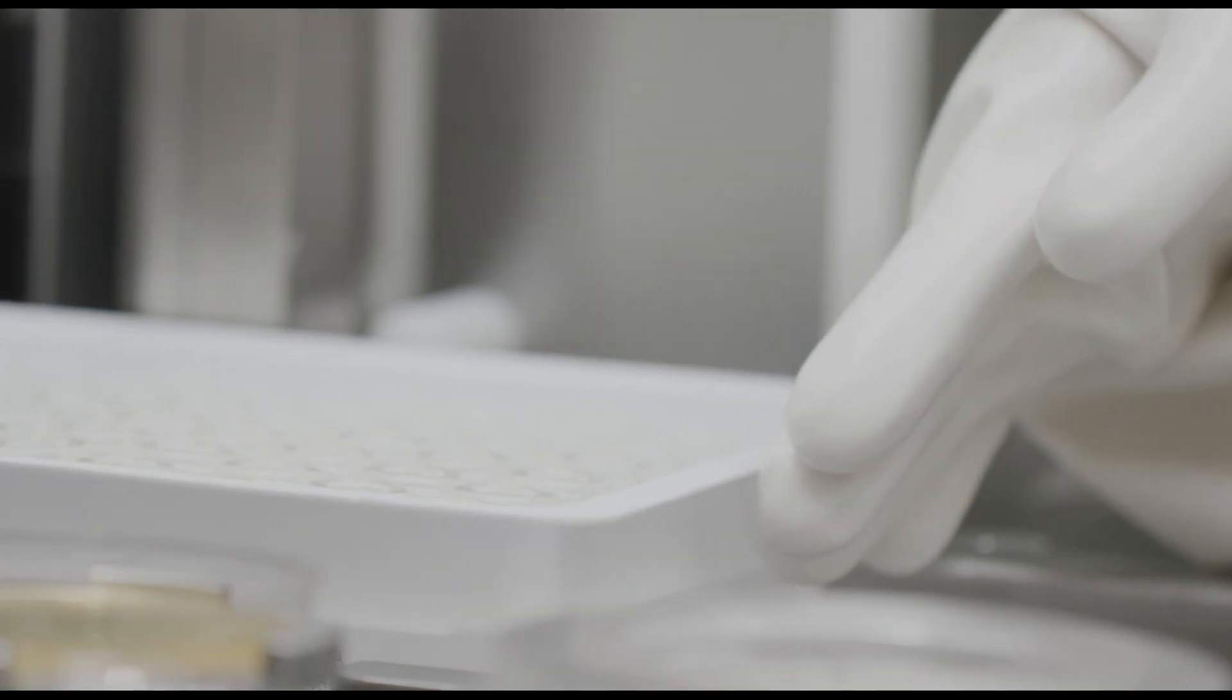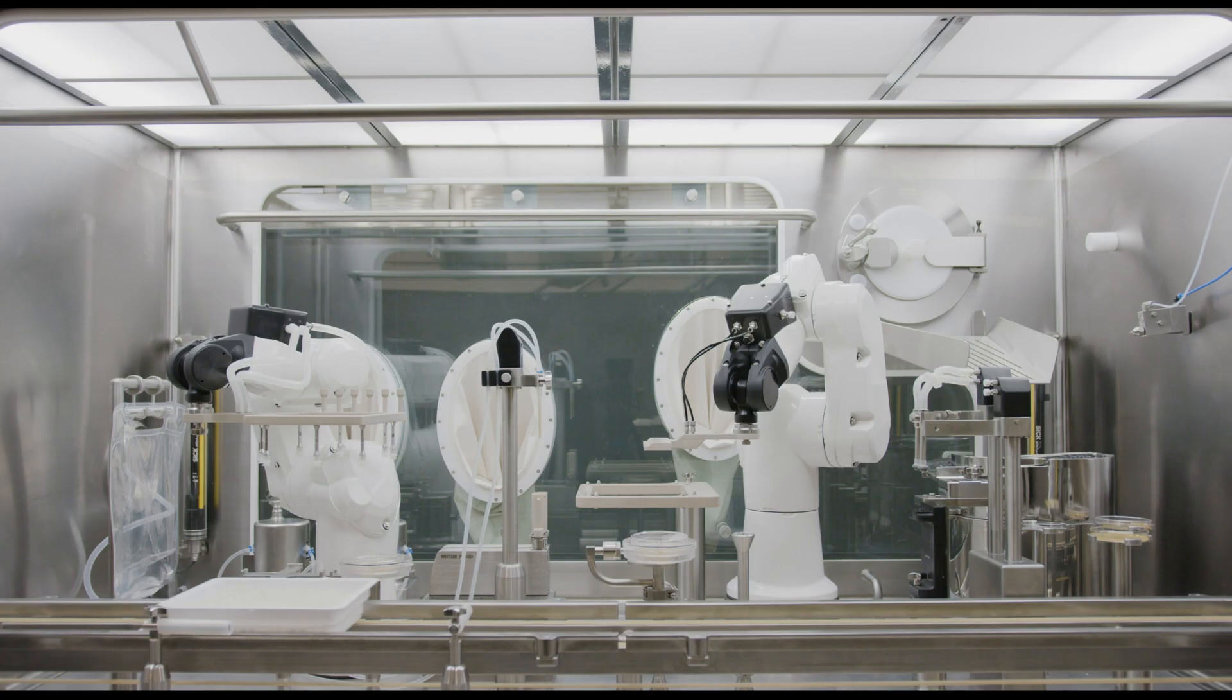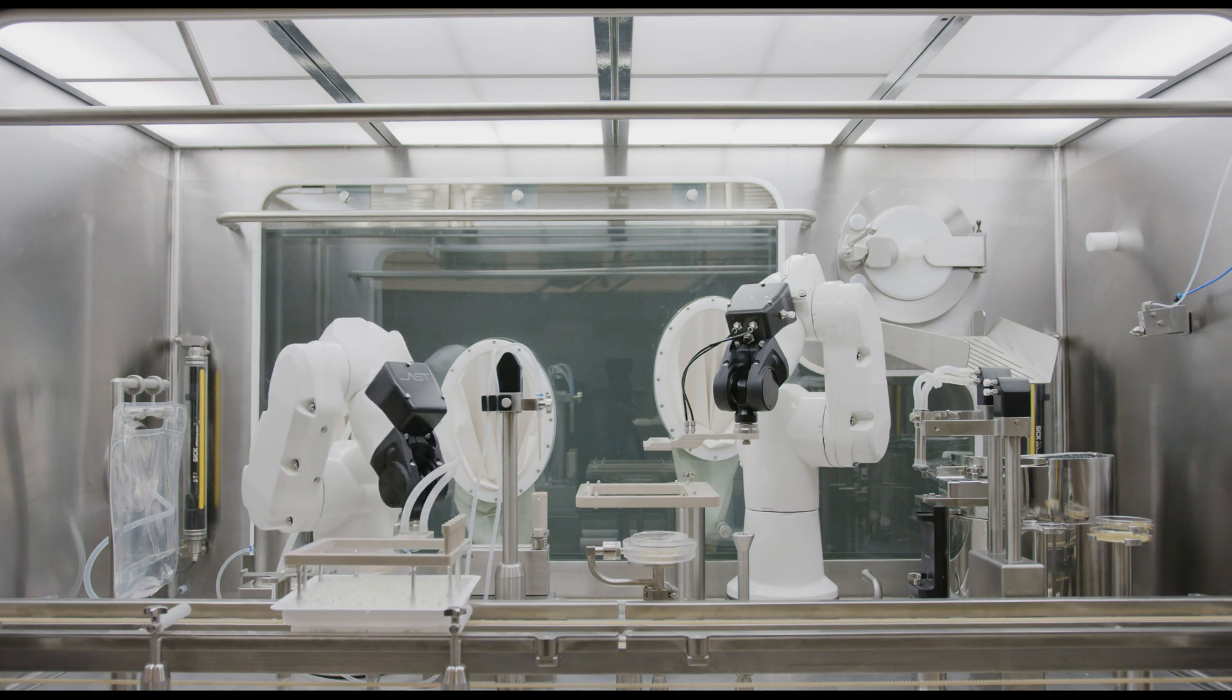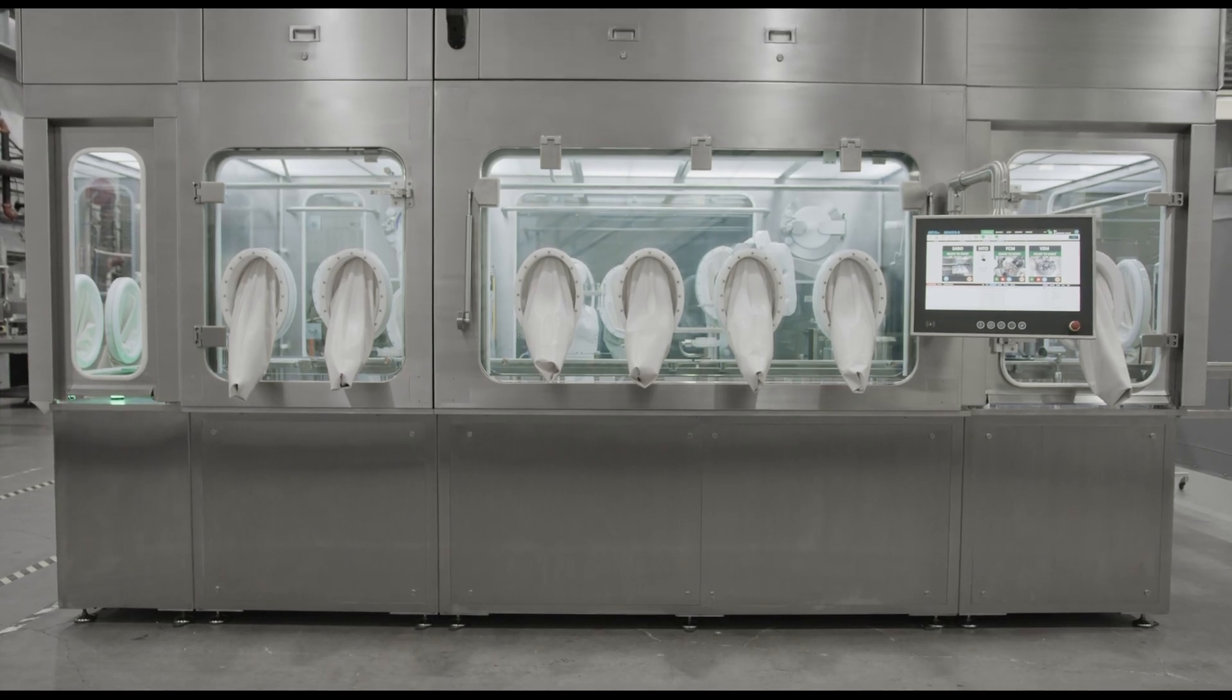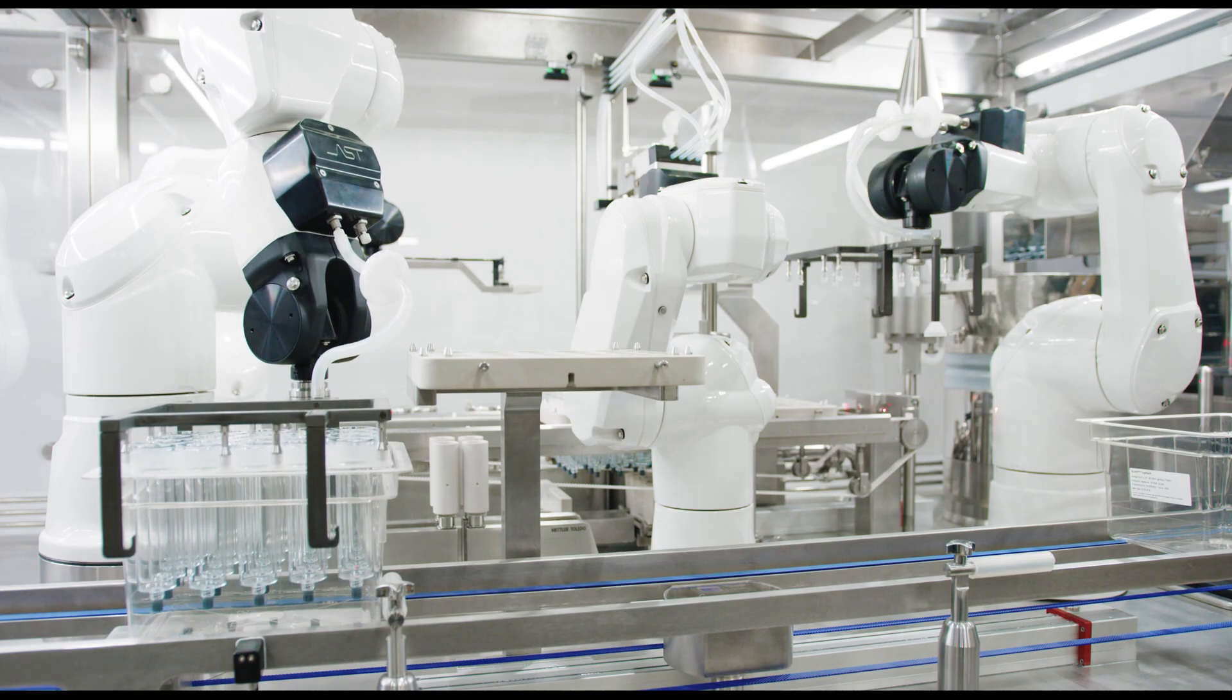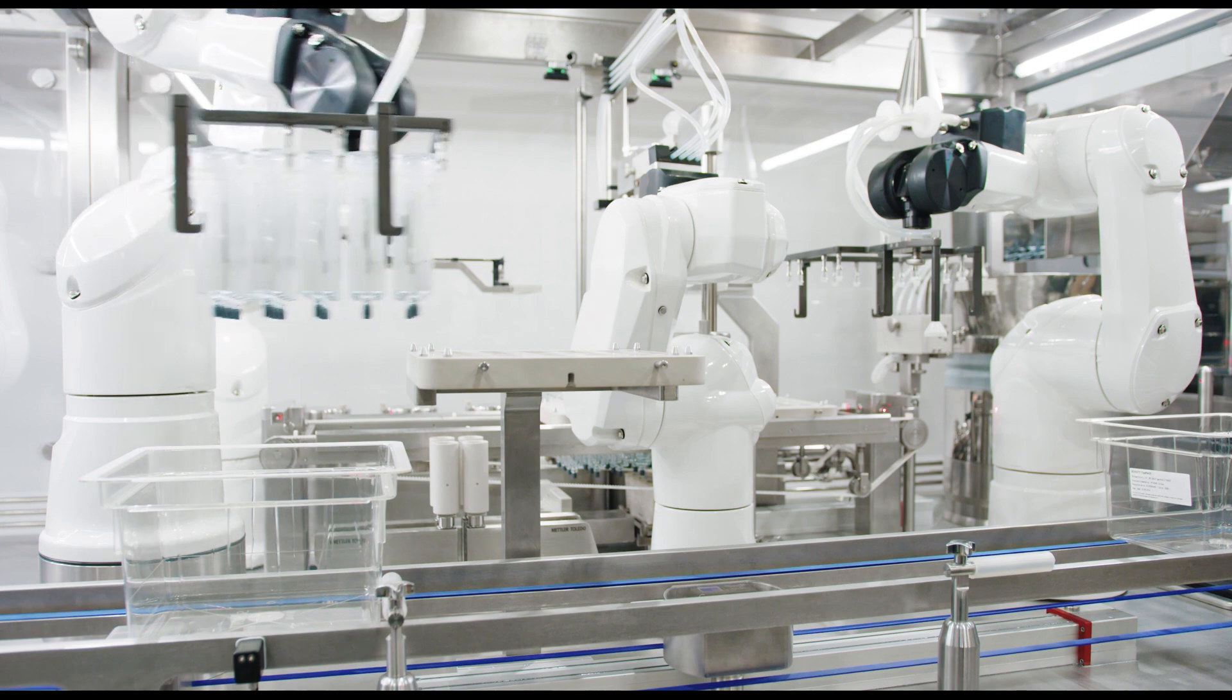The Genesis R is designed for customers who need a high rate of IPC, or in-process weight checks, while the Acepticel provides higher throughput. Both are highly flexible with minimal change parts and some of the most compact systems available in their market segments.